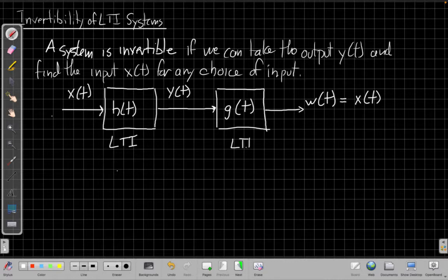So that means this overall box of series of two LTI systems is acting like the identity system, like just a wire that goes through without changing anything, a direct connection.